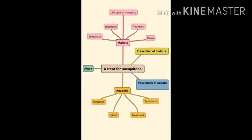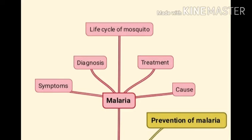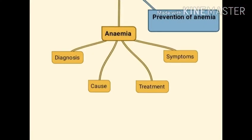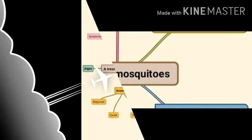Let's have a look at the mind map of this chapter. In this chapter, we will discuss about malaria, its cause, symptoms, treatment, prevention and diagnosis. We will discuss the life cycle of mosquito. We will study about anemia, its cause, its symptoms, prevention and treatment. We will also discuss about algae. So let's begin the chapter.